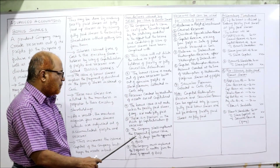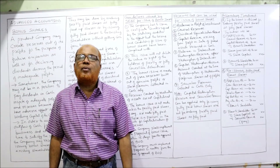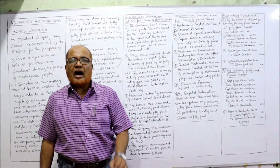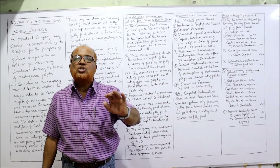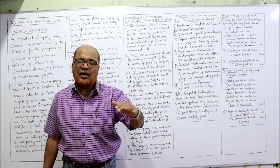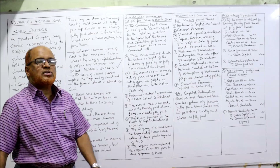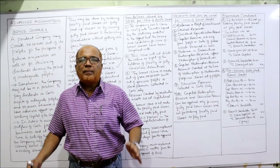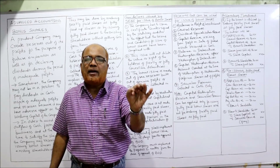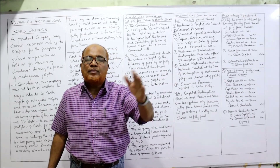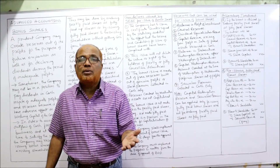The company shall implement the bonus issue proposal within 15 days from the date of approval by the board of directors. After the approval of the board of directors, within 15 days, the company shall start implementing the bonus proposal. The company must completely implement the proposal within 2 months. After 2 months, the proposal will lapse and a new proposal has to be made.